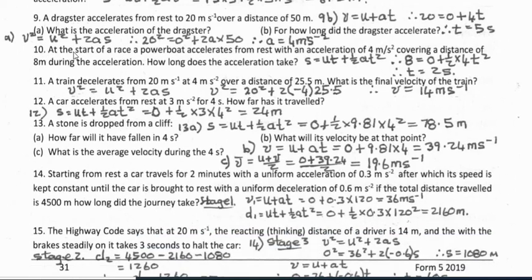Question 10: at the start of a race, a powerboat accelerates from rest at 4 meters per second squared, covering 8 meters — how long does the acceleration take? Using s = ut + ½at²: 8 equals 0 plus ½ times 4 times t², therefore t equals 2 seconds.